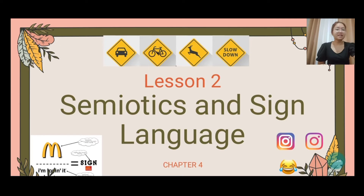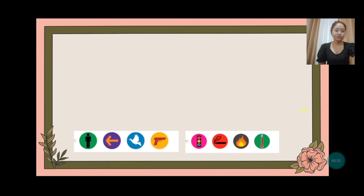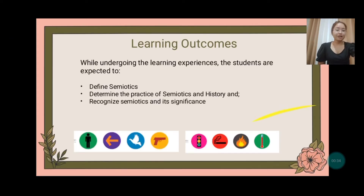But before we start the discussion, let me share with you first what we will be expecting in this lesson. So the learning outcomes — while undergoing the learning experiences, the students are expected to: define semiotics, determine the practice of semiotics and its history, and recognize semiotics and its significance.